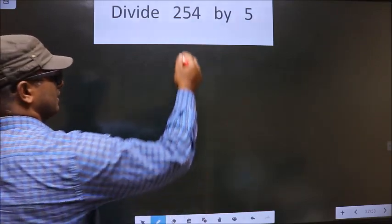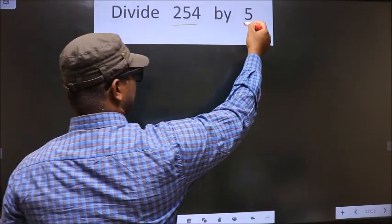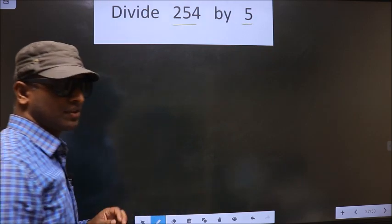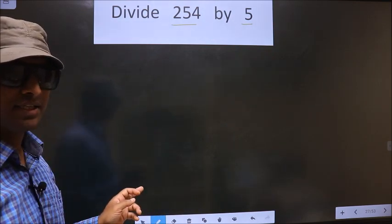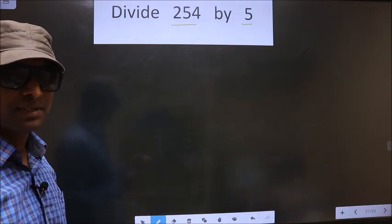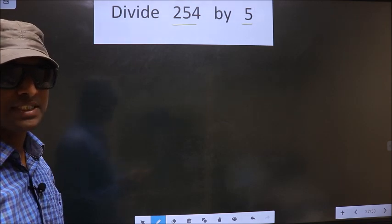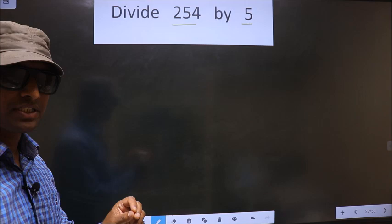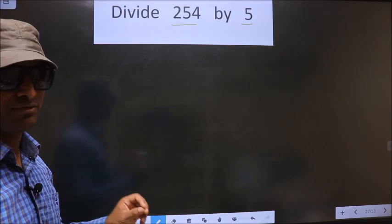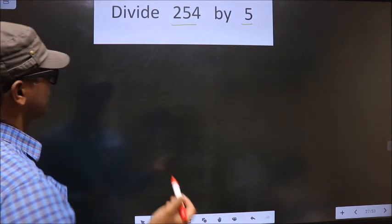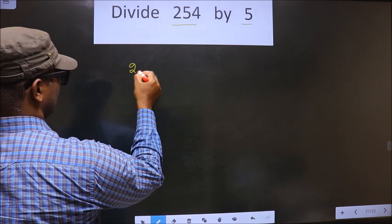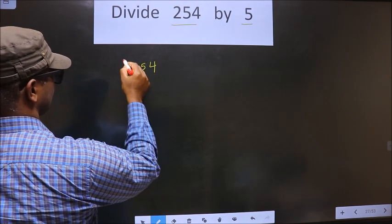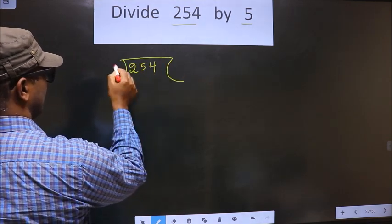Divide 254 by 5. While doing this division, many do the mistake. What is the mistake that they do? I will tell. But before that, first we should frame it in this way. See, that is 254 and 5 here.